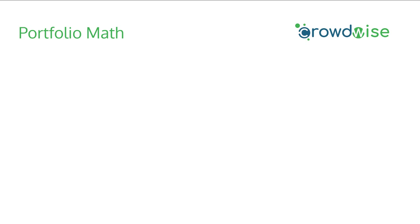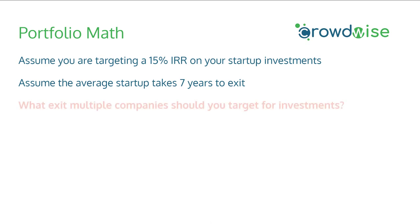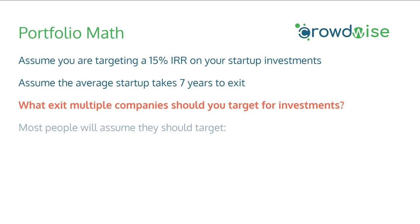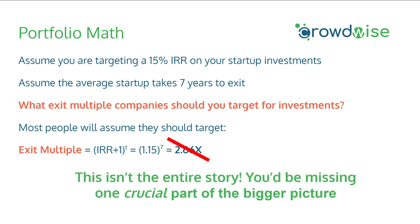Now let's look at what all this IRR and exit multiple math means in terms of your startup portfolio. Assume you're targeting a 15% IRR on your portfolio of startup investments, and the average startup takes 7 years to exit. Most people would just plug 0.15 IRR and t equals 7 into the exit multiple equation and obtain a 2.66x target. But that's wrong — you'd be missing one crucial part of the bigger picture: the failure rates of startups. Because startups are so high risk and many will fail, it's crucial to include this in your startup math.